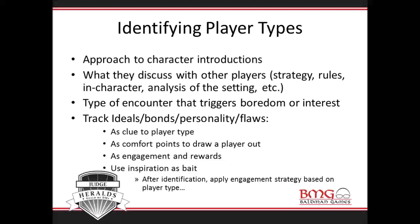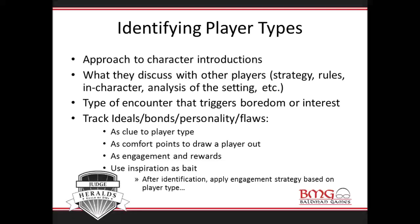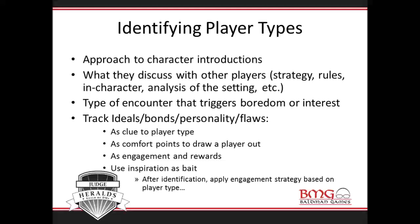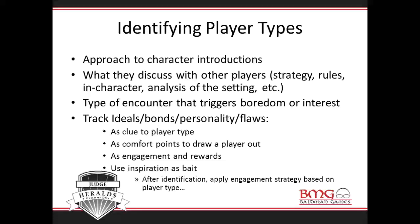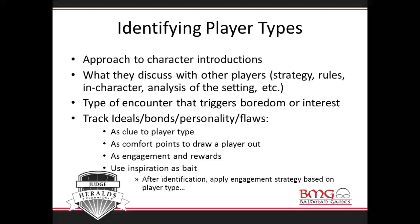Another thing you can do — and it takes a lot of practice in fifth edition — is find a way as a DM to track ideals, bonds, personalities, or flaws. That will give you a clue as to the player type and comfort points that help you draw in a player. It also gives you an engagement mechanism with a reward, because you can hand out inspiration when they play to their flaw, and your adventure can cater to that. That identification and reward mechanic through ideals, bonds, personalities, and flaws is a great way to work with player types.